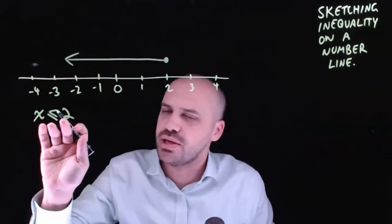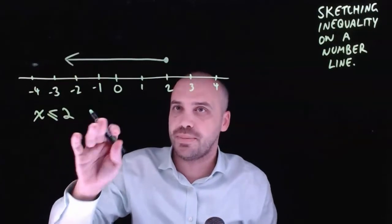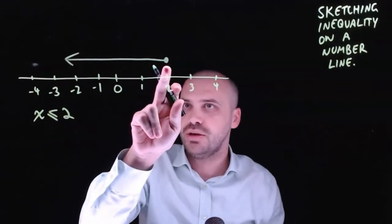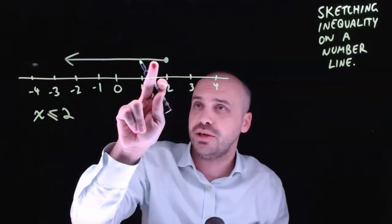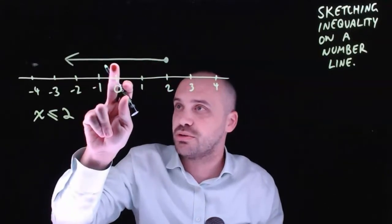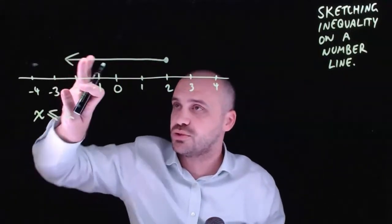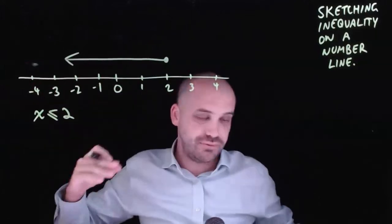Think about what the inequality x is less than or equal to 2 is saying. x could be 2, certainly, but x could be 1.9, it could be 1.8, it could be 0, it could be negative 1, it could be negative 2, it's all of these numbers to the left of 2.